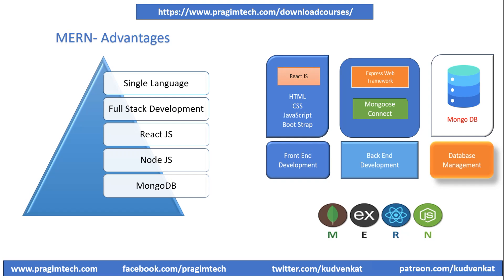MongoDB is a flexible and scalable NoSQL database that stores data in JSON-like documents. It offers dynamic schemas, horizontal scalability, and powerful querying capabilities, making it suitable for handling diverse data types and scaling applications as they grow.